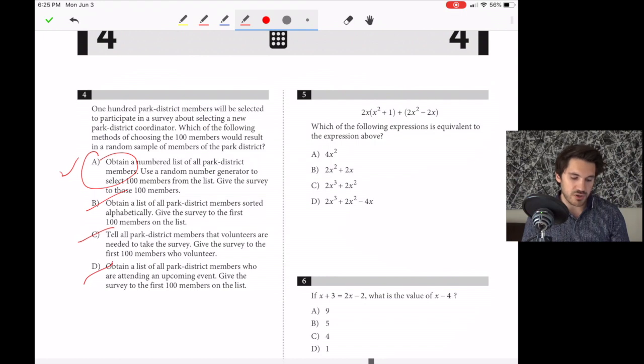Number five, which expression is equivalent to the expression above? Let's distribute and combine terms. 2x times x squared is 2x to the third, plus 2x squared, and the 2x's cancel out. We're left with 2x to the third plus 2x squared, which is answer choice C.